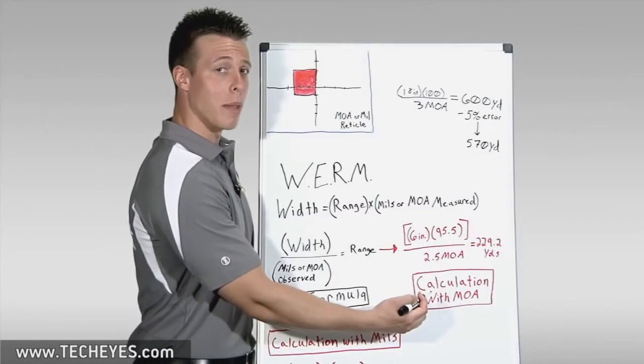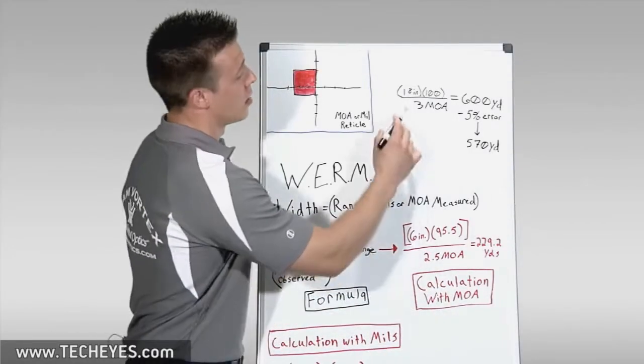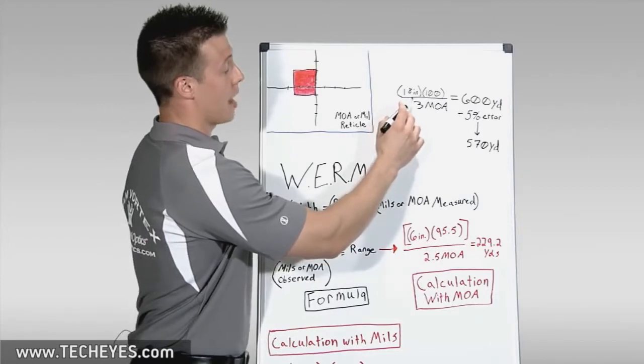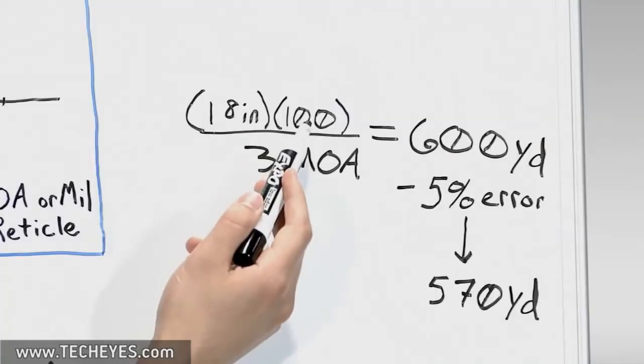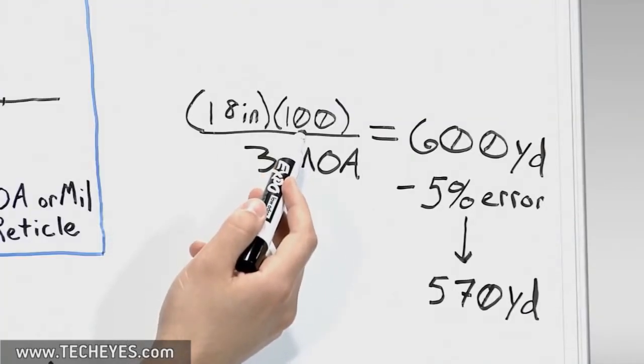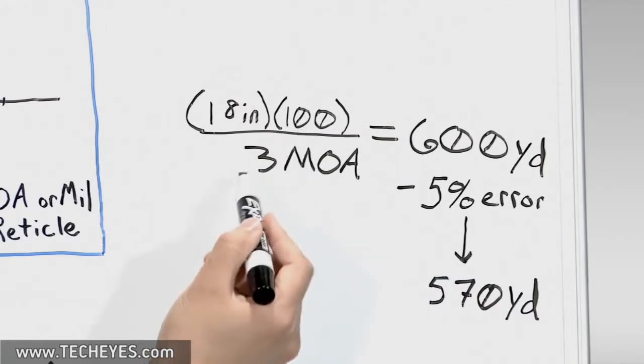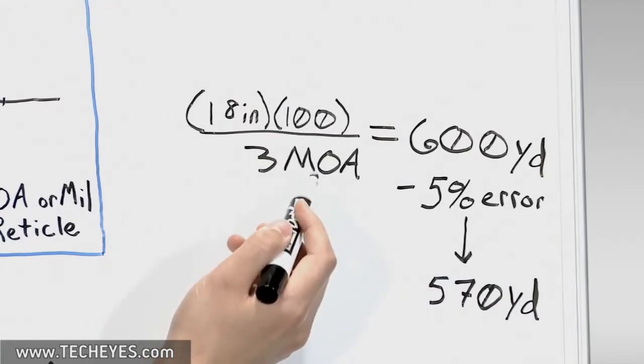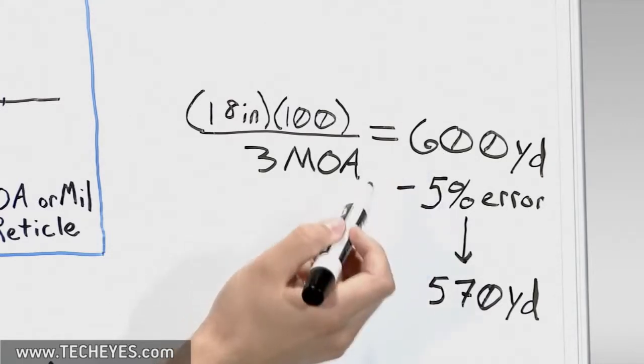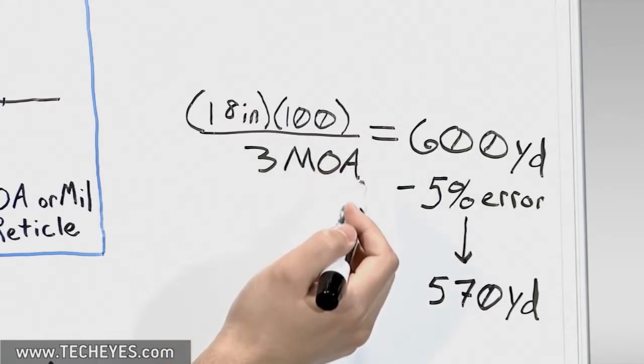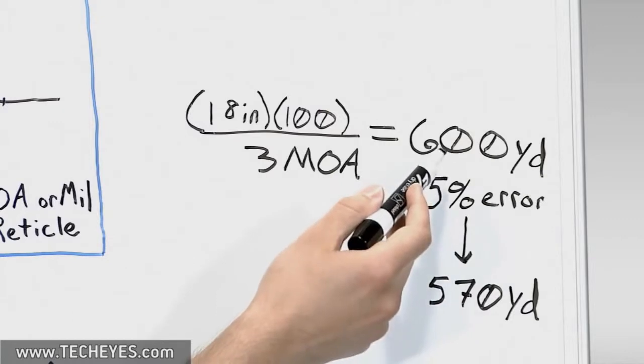Let me show you what I mean by that. Let's take a different example. In this case, we're measuring a target that is 18 inches wide, and we use 100 instead of 95.5 to save time for the sake of simplicity. We'll divide this by 3 MOA, because in this case, we'll say our target fills out that much, and then we'll get a value of 600. If we left it at that, we would assume that our target is 600 yards away.